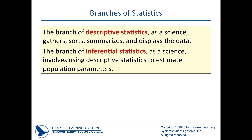Inferential statistics is where we use our sample to start making an inference about a larger group called our population. For example, collecting information from 542 travelers and using that to generalize to the population of all American travelers.